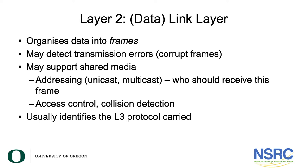Layer 2 may also have some mechanism for doing access control — in other words, taking turns as to who can use the medium — and collision detection, which is making sure we can recover if two devices try to transmit at the same time. This was something used with hubs, but nowadays the most important application is in wireless networks where devices take turns to transmit. Usually Layer 2 will also carry some information about what Layer 3 protocol is being used, which allows you to mix multiple Layer 3 protocols on the same network.